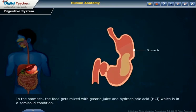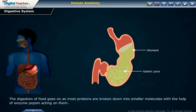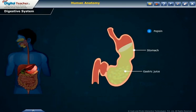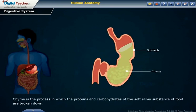In the stomach, the food gets mixed with gastric juice and HCl, which puts it in a semi-solid condition. The digestion of food continues as most proteins are broken down into smaller molecules with the help of the enzyme pepsin acting on them.